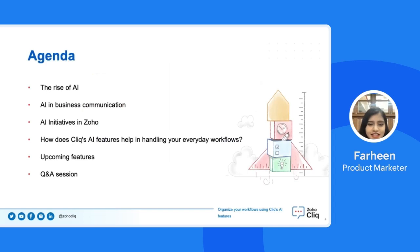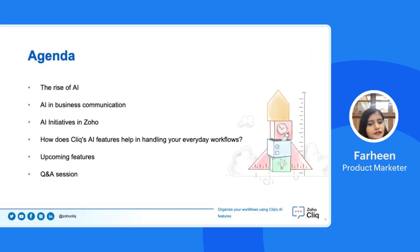Let us look at today's agenda. I'll start with a quick introduction on using AI for businesses and how it has evolved over the years. Then we'll look at how AI is used in business communication, followed by the various AI technologies we are using at Zoho, with a brief introduction on what we are currently focused on.